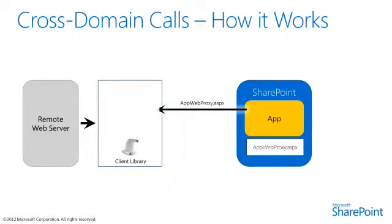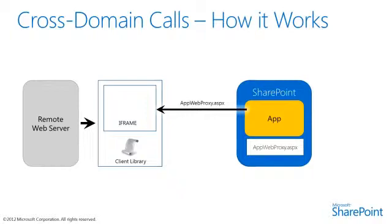At this point, the library creates an iframe in the remote page that references the appwebproxy.aspx page. The remote web server page has an iframe in it, and within that iframe is the appwebproxy.aspx page. The proxy page source domain is the SharePoint web, so calls are restricted to the permissions that are granted to the app. Communication is set to only allow point-to-point calls. SharePoint serves only those requests that come from the registered trusted domain. When the iframe receives a response, it makes sure that it comes from the SharePoint domain, otherwise it will be ignored.